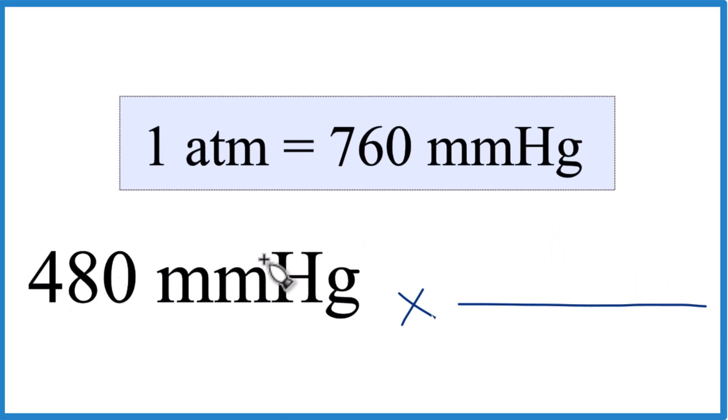So we want to cancel out millimeters of mercury. So we're going to put that 760 millimeters of mercury there on the bottom. That way they'll cancel out. Then we have one atmosphere that'll go up in the numerator there.